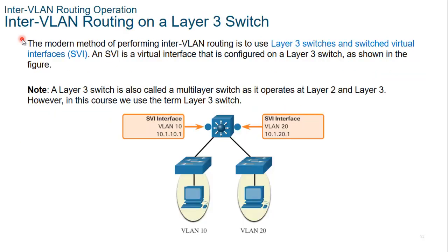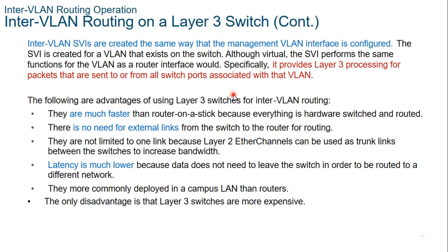Now let's look at a modern method of inter-VLAN routing. This method uses layer 3 switches and switch virtual interfaces, or SVIs. An SVI is a virtual interface configured on a layer 3 switch. Instead of using a router, we are using a switch with routing capabilities — a layer 3 switch, sometimes called a multi-layer switch because it operates on layer 2 and layer 3. Inter-VLAN SVIs are created the same way that the management VLAN interface is configured. Although virtual, the SVI performs the same functions for the VLAN as a router interface would, providing layer 3 processing for packets sent to or from all switch ports associated with that VLAN.